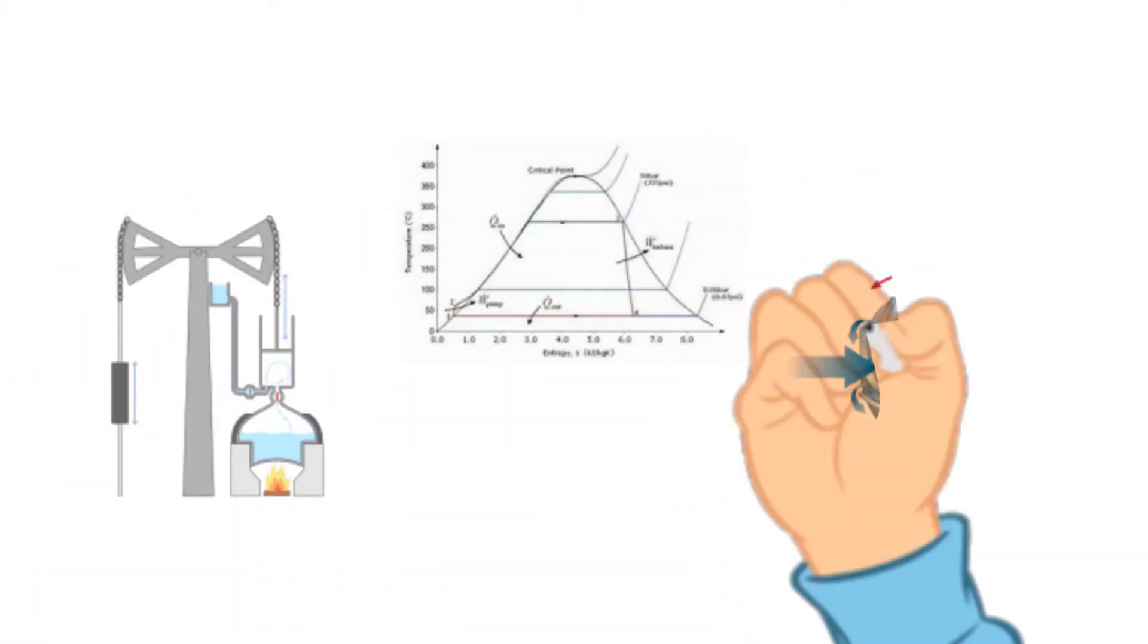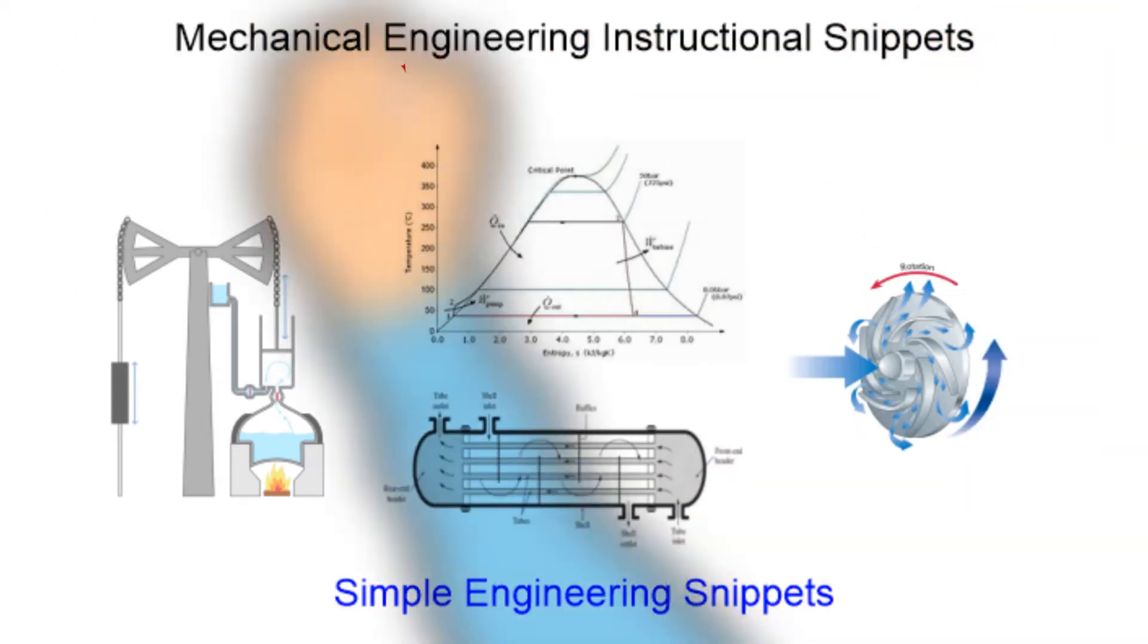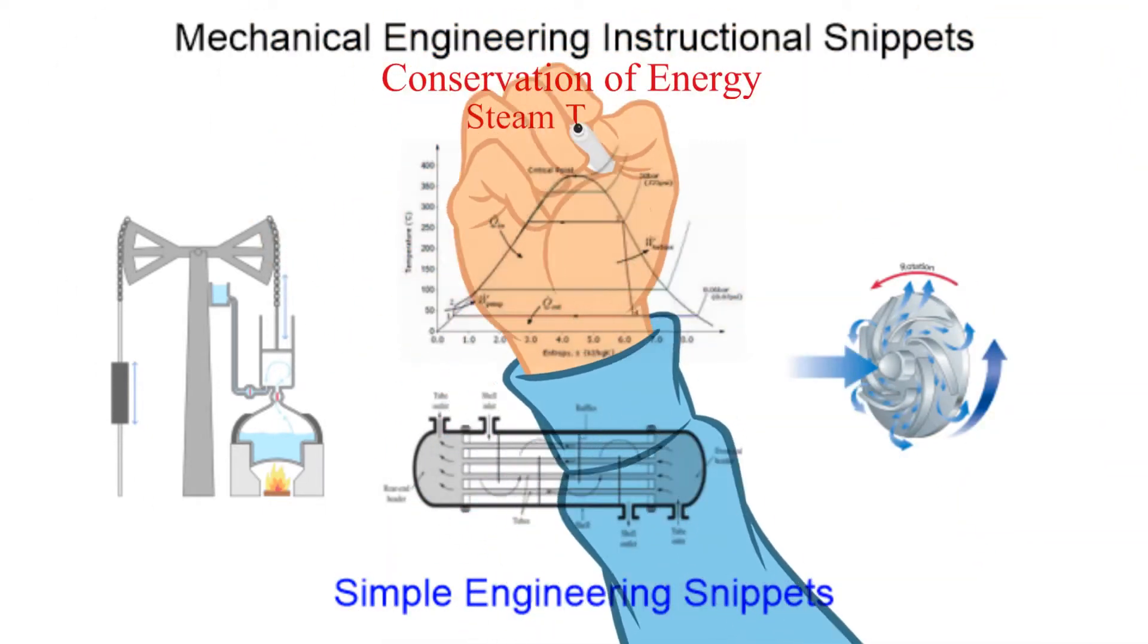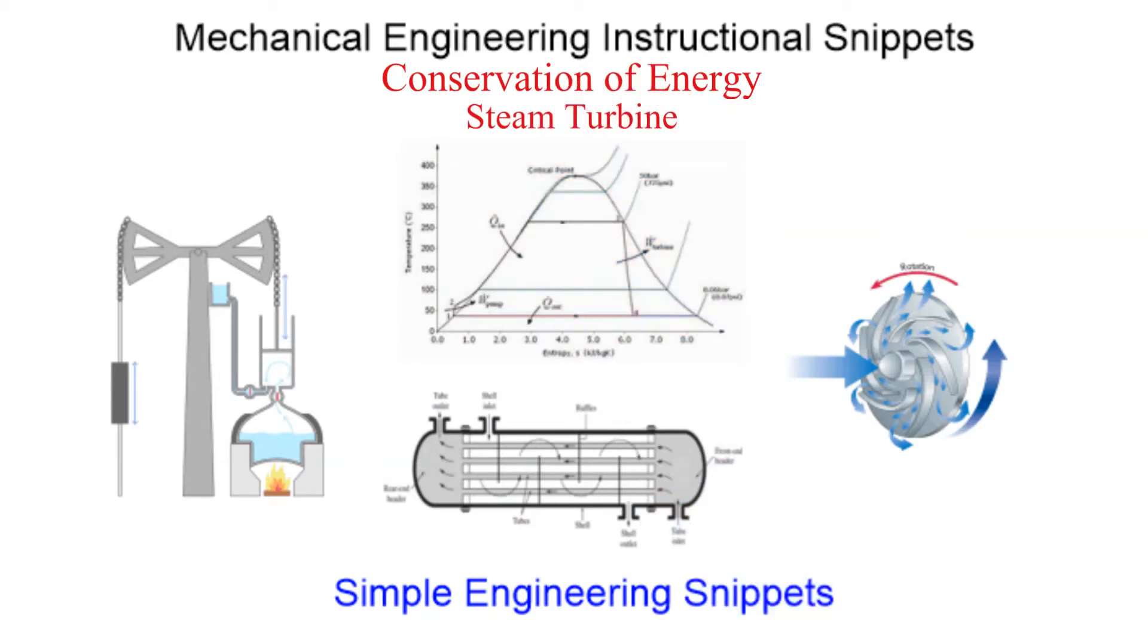Welcome to another Engineering Instructional Snippet. The example problem for this video has two parts. In part one we will calculate the change in specific energies across a steam turbine with the given data. In the second part we will calculate the mass flow rate of the steam once given the turbine output shaft horsepower.